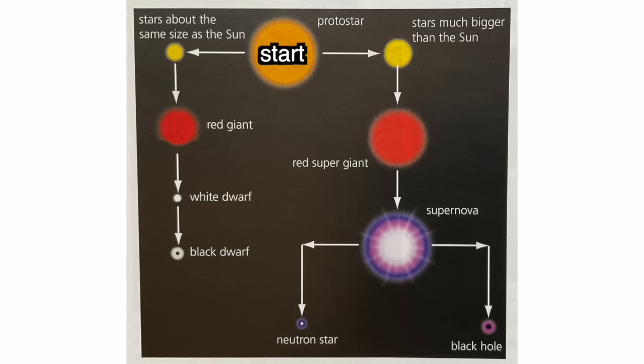If you do combined science, that's all you need to know. For those doing triple, space physics is the last topic. The most important thing is the life cycle of a star — it splits two ways. Stars around the same size as the sun become red giants, then a white dwarf, and then a black dwarf. Stars bigger than the sun become a red supergiant, then go supernova, and either become a black hole or a neutron star.